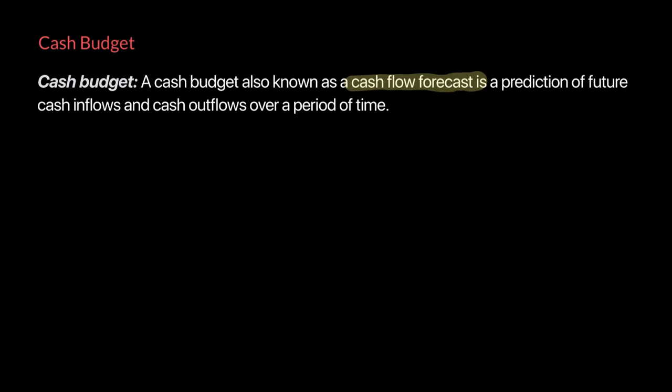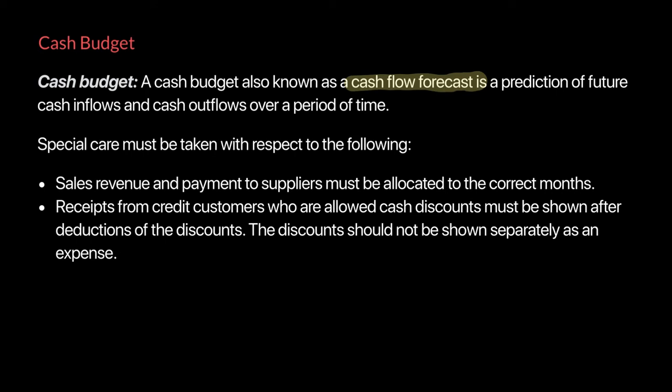The cash budget is perhaps the most important budget in this topic — examiners frequently test it. Due to its importance, we need to focus on what will be included in a cash budget and what will not be included. For a cash budget, we need to give special consideration to sales revenue and payments to suppliers — we need to see in what month these receipts will be received and in what months these payments will be made.